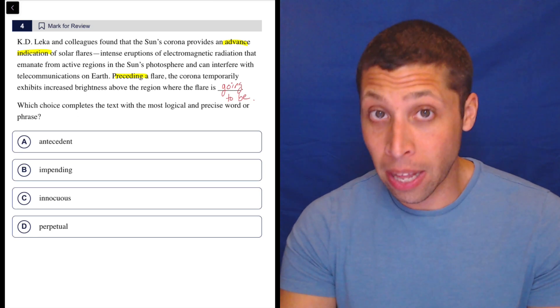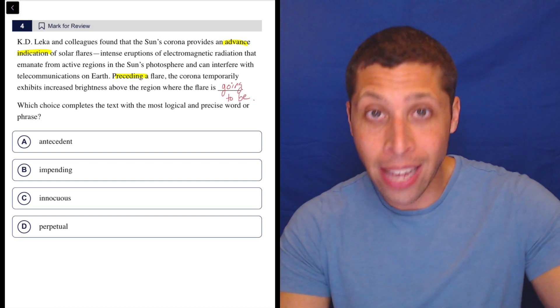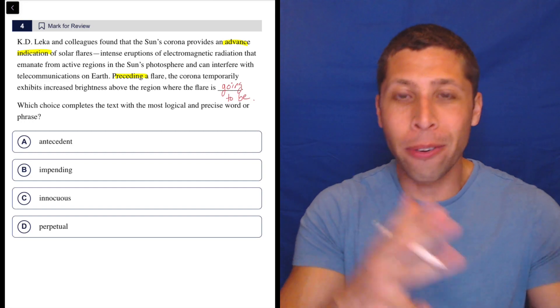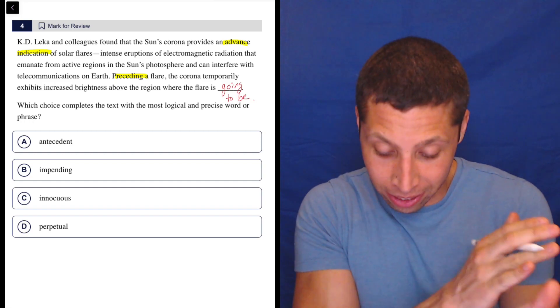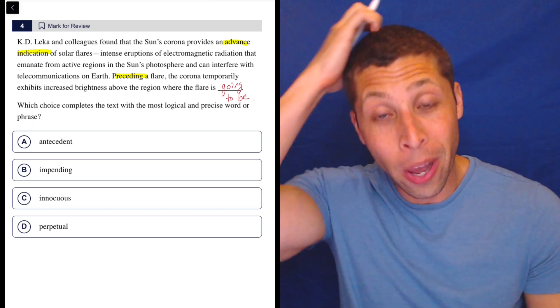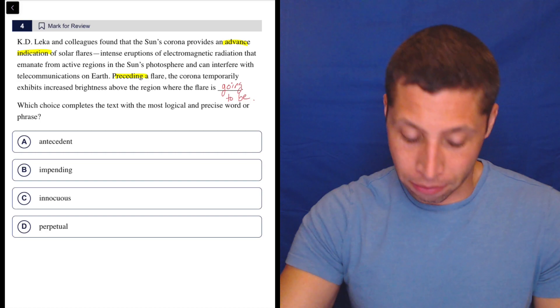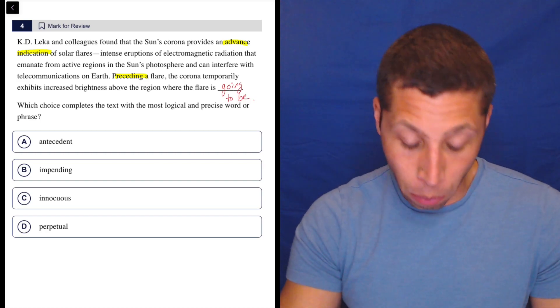And we can see that's kind of confirmed from the first sentence. K.D. Lekka and colleagues found that the sun's corona provides an advanced indication, right? It's about like first that we see the flare or the corona, then we see the flare in the same spot. So they are saying this pretty clearly, but then the words are tough. So it's going to be kind of something coming before it.